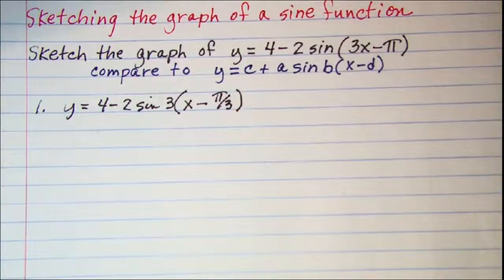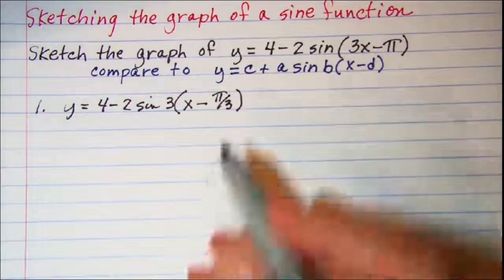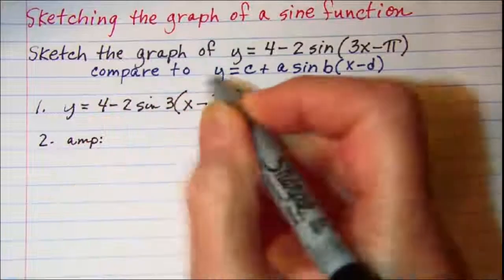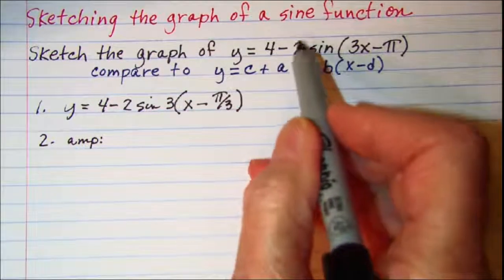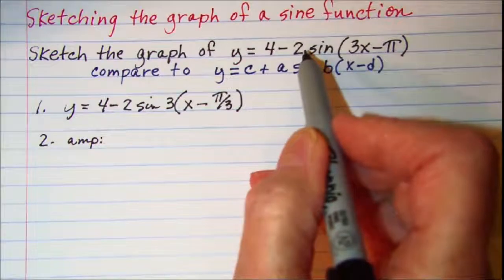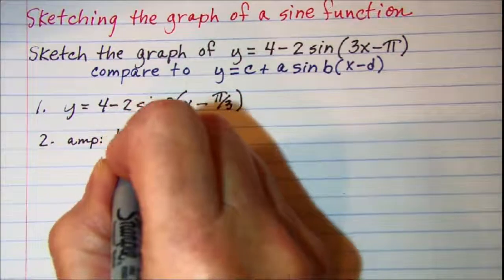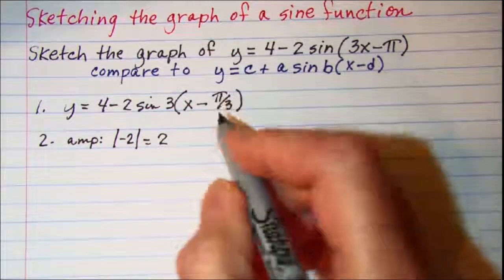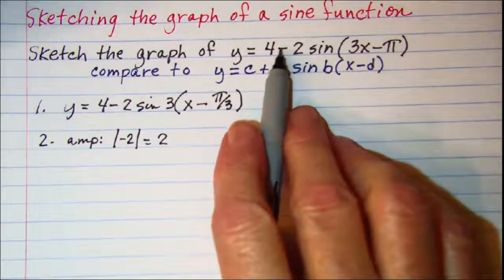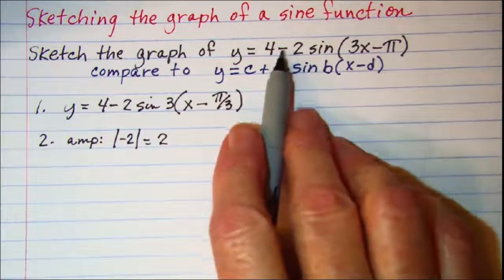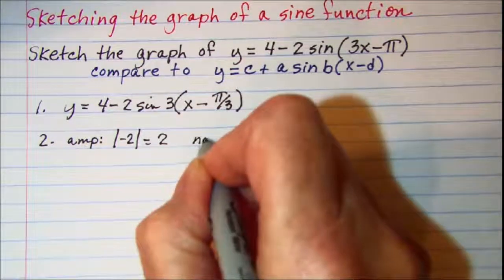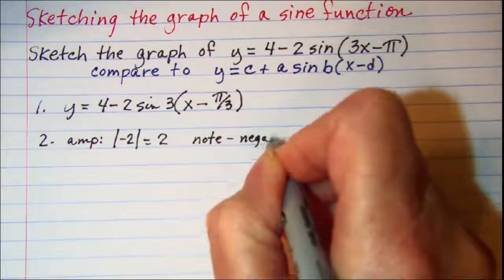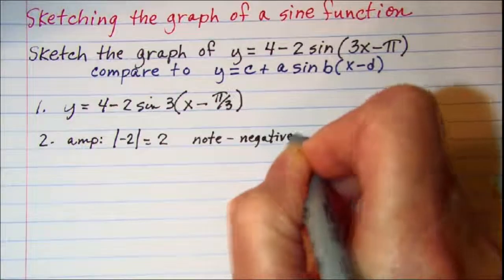Step 2, I want to find the amplitude. The amplitude is absolute value of a, so the absolute value of negative 2 is 2. But we are also going to need to notice that this is a negative sine curve. So make a note that it's a negative sine curve.